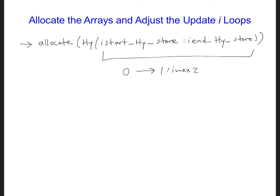Whereas processor 1 will get to this point of the code, it'll read this line, and it will define the HY array as going from IMAX divided by 2 to IMAX minus 1.